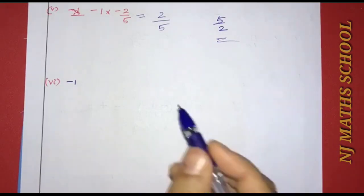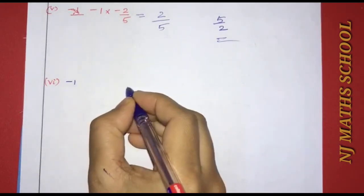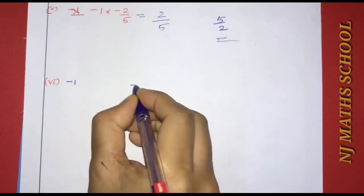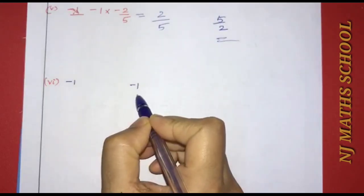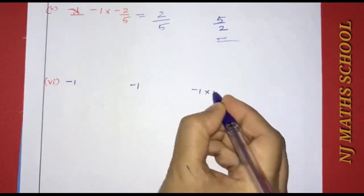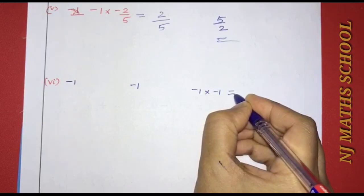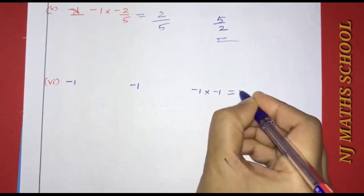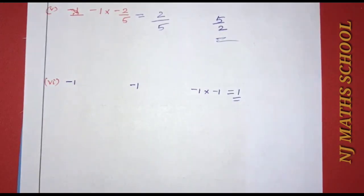For negative 1, the multiplicative inverse is also negative 1, since negative 1 into negative 1 equals positive 1.